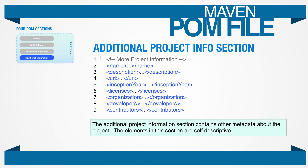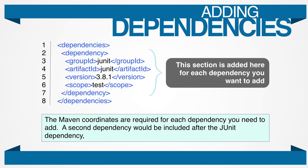Additional project information contains other general information about the project — this section can list a human readable name for the project, the developers involved, contributors, the software license file, etc. Looking at the POM file included in the code package, you'll notice JUnit is added as a dependency under the dependencies element. This is how dependencies are added to a project — you simply add the Maven coordinates for the dependency you want to add, and you're done.